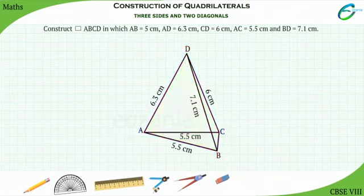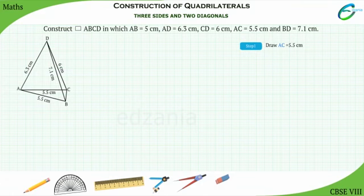Steps for Construction. Step 1: Draw AC equal to 5.5 cm.